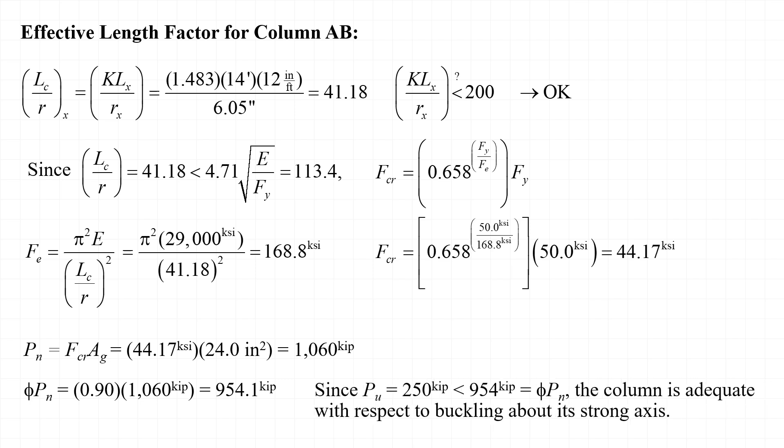So, since P sub U is less than phi times P sub N, the column is adequate with respect to buckling about its strong axis.